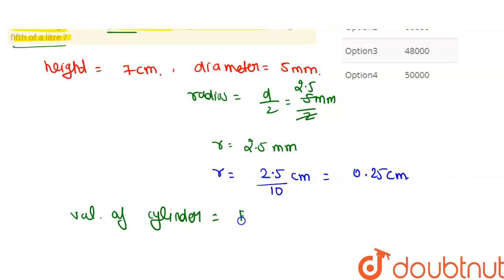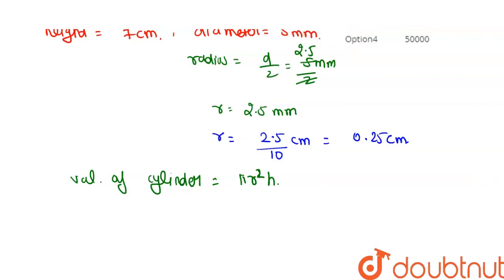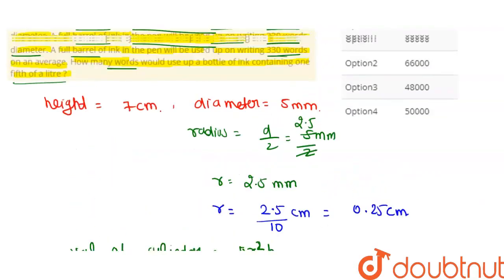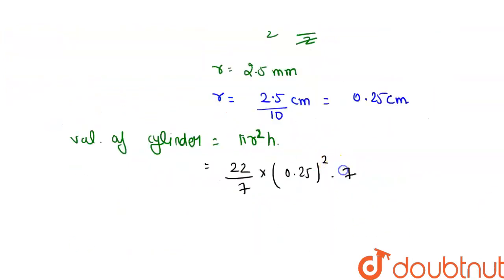The volume of the cylinder is given by the formula π r² h. The value of π is 22/7. So, volume = (22/7) × (0.25)² × 7, where the height is 7 cm.